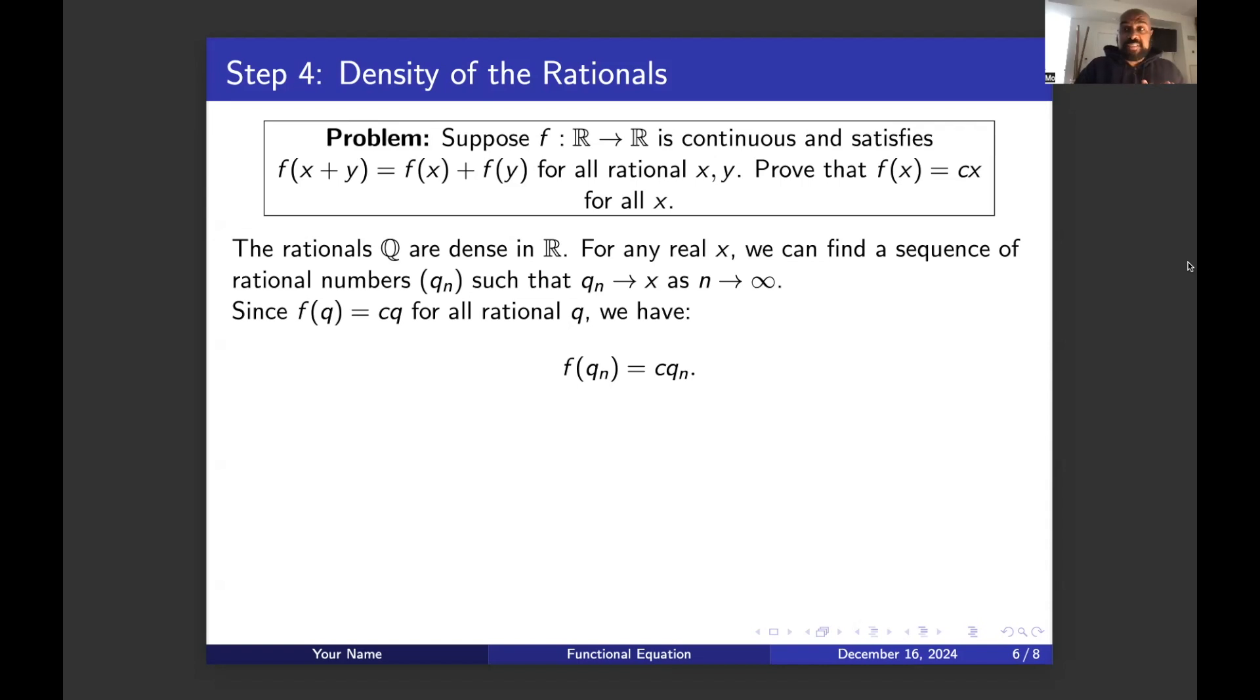Well, since f of q is c times q for any rational number, if we take a sequence of rational numbers converging to a particular real number x, we know that when we evaluate each of these rational numbers under f, we'll get c times that given rational number. And so we'll notice that if we take the limit as n approaches infinity of f of q_n, that is equal to the limit of these values as n approaches infinity, but the sequence q_n is approaching x. So that means this thing converges to c times this limit, which is c times the actual x that the individual q_n's are converging to.